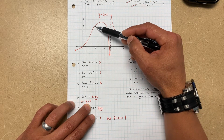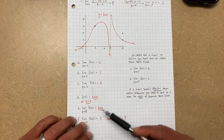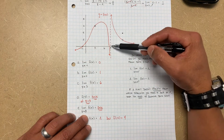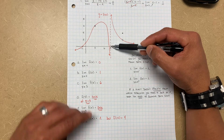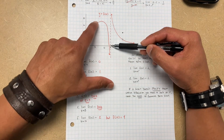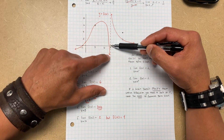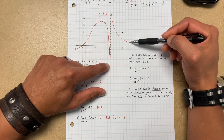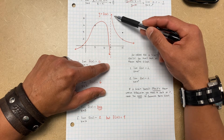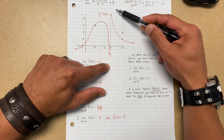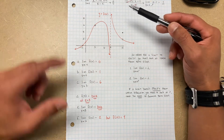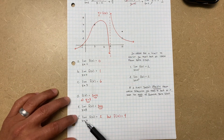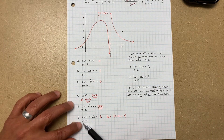What about the limit as X approaches 8? From the left side it goes down to negative infinity, but from the right side as we approach it, it goes toward positive infinity — unbounded. So the limit does not exist.